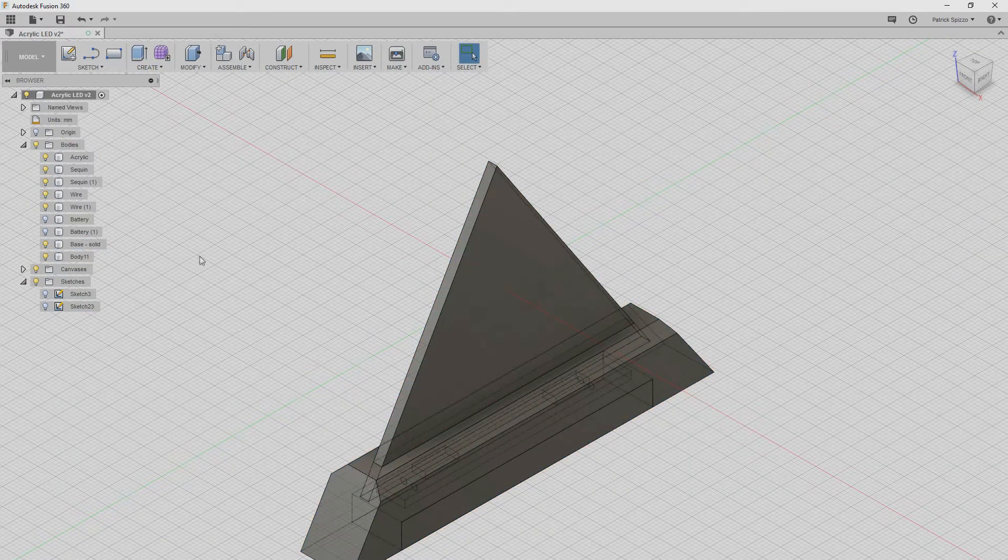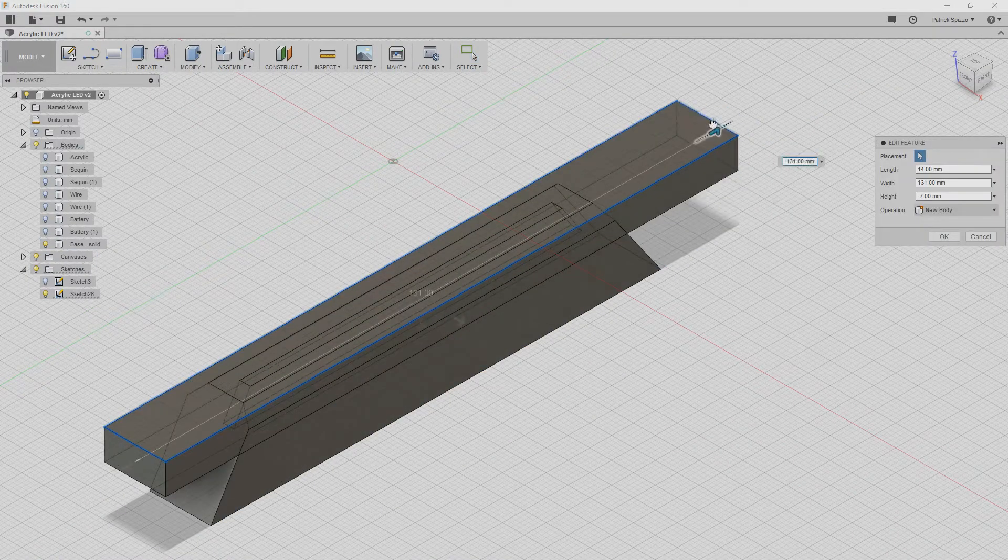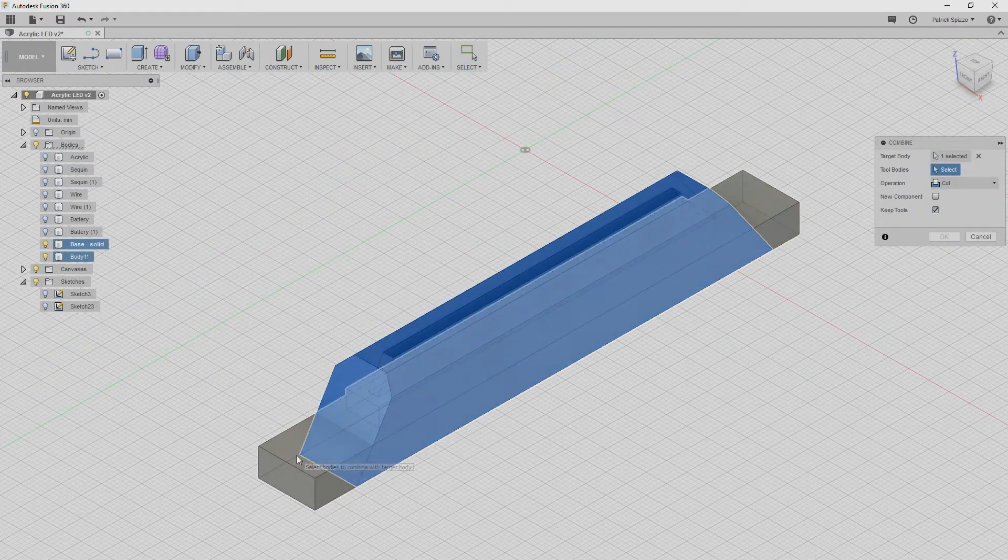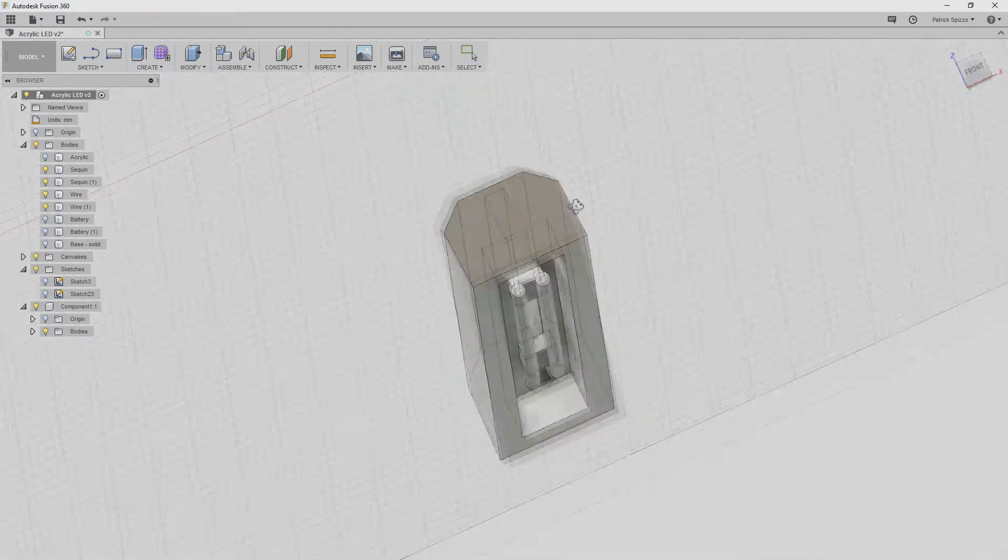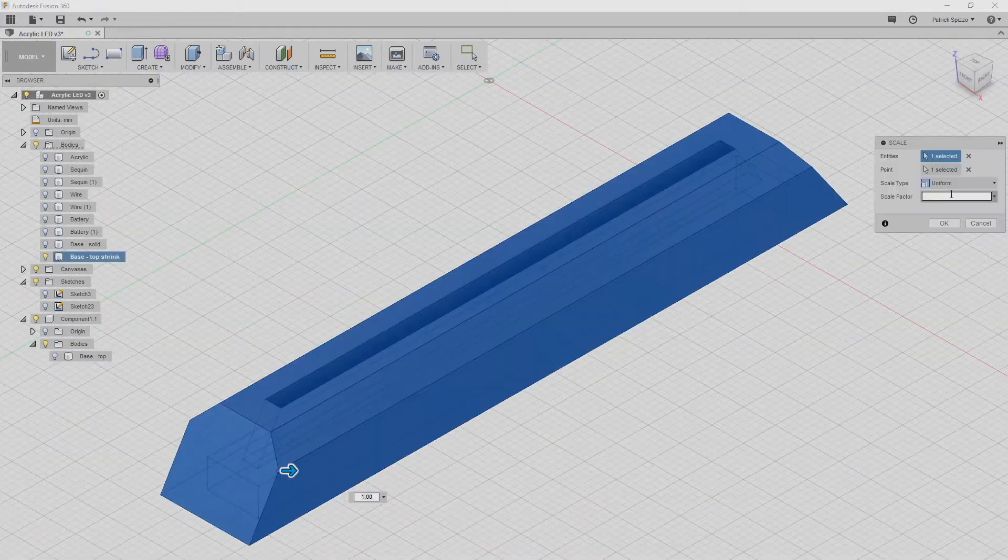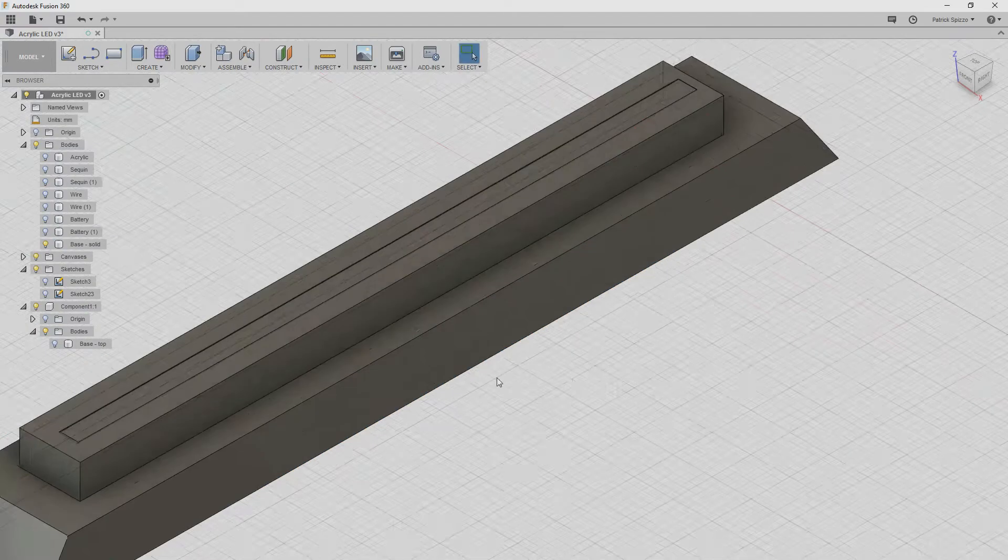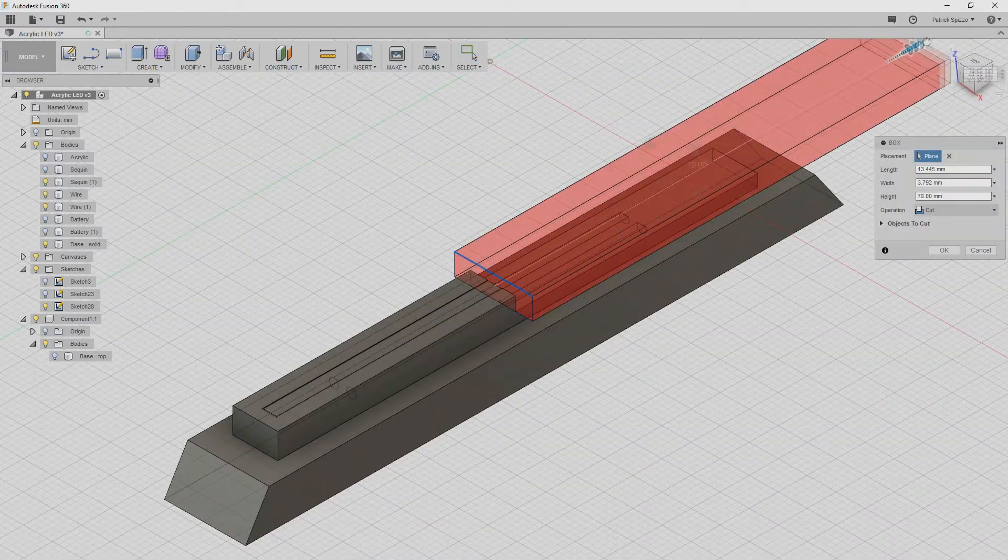Next, I used the combine tool to cut a hole into the base so the acrylic can slide in. Then I used the combine tool again to create the top piece, by subtracting out the bottom half and cutting a box-shaped hole in the middle where the components will go. Next, I used a copy of the top piece, with the inside faces slightly scaled smaller, and used the combine tool to cut out the final bottom piece.